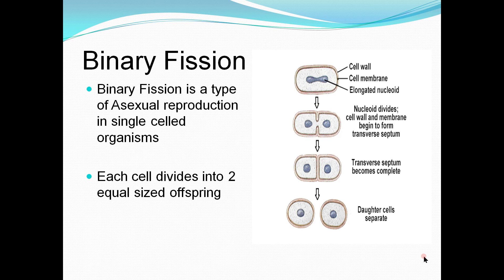Binary fission is a type of asexual reproduction, and this process takes place in single-cell organisms when conditions are favorable — for example, the right temperature and nutrients are available. For some bacteria, for example Escherichia coli, they can divide every 20 minutes, meaning in just seven hours the bacteria can generate about 2,097,152 bacteria.